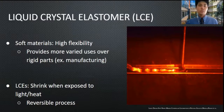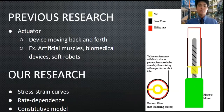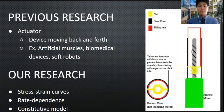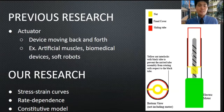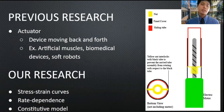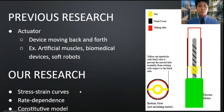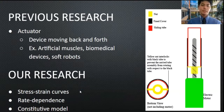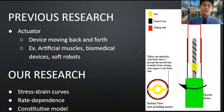That's why current research has been studying the actuation properties of LCEs. An actuator is a device that can move back and forth, and that's easy for an LCE because all you have to do is turn on and off some lights to get actuation. That's why LCEs have found use in artificial muscles, biomedical devices, and more. Our research is focusing on the stress-strain curves of LCEs, the rate dependence, and eventually we want to create a constitutive model to explain them.